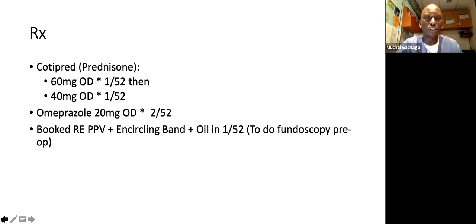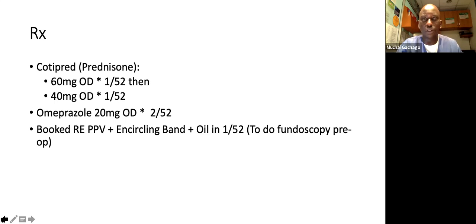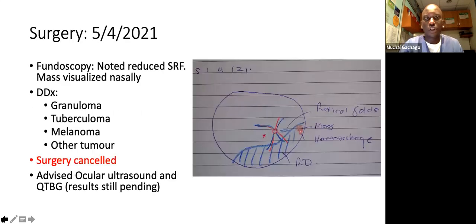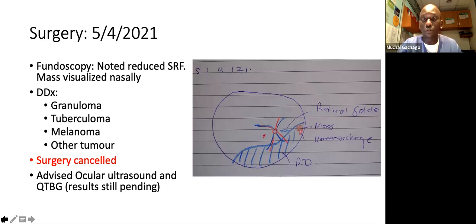We put the patient on prednisone 60 milligrams to taper down to 40 after a week, with omeprazole, and booked for a possible vitrectomy, band and oil. We planned to do a fundoscopy preoperatively because if it's largely inflammatory, you'll find a lot of change before then. On the date of surgery, we did a fundoscopy, and sure enough we noted a significant reduction in the subretinal fluid. As this fluid was reduced, we could actually see there was a mass nasally — it appeared brownish with a small associated hemorrhage on it, and a few retinal folds due to the reduced subretinal fluid.